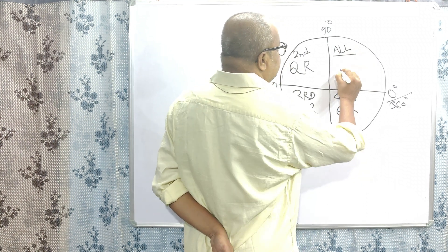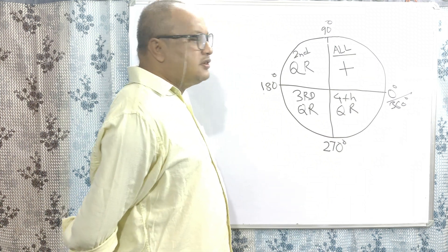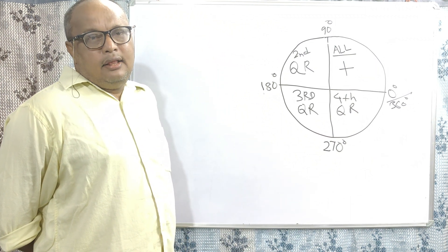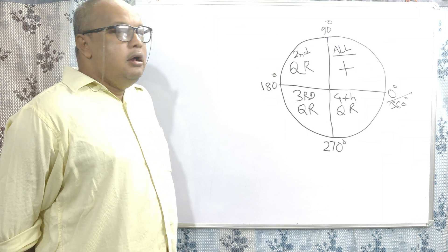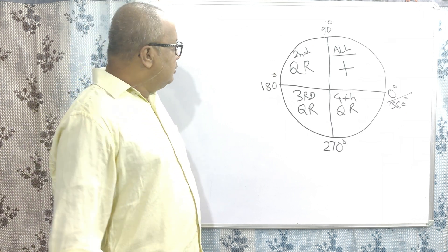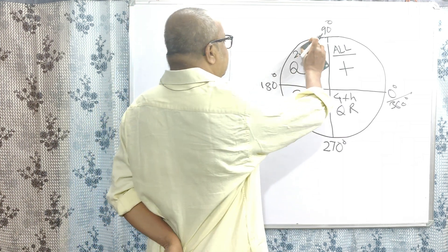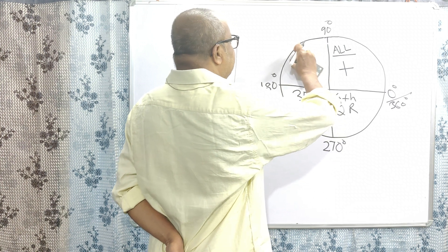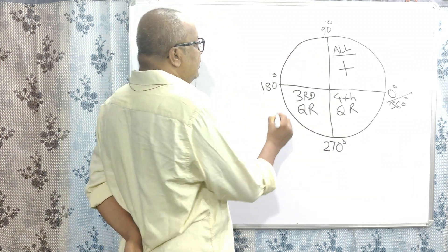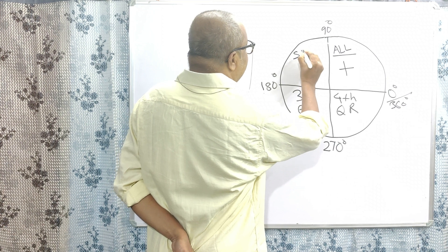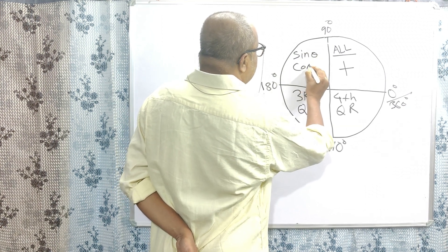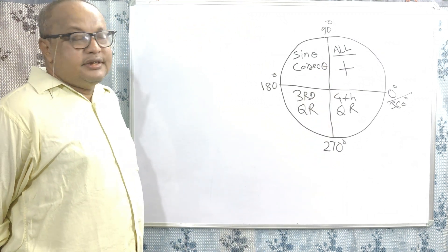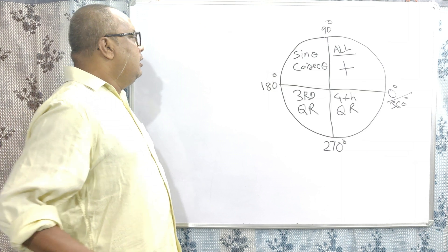All trigonometric values — that means sin theta, cos theta, tan theta, cot theta, cosec theta, sec theta — all are positive in the first quarter. And in the second quarter, only sin theta and cosec theta are positive.